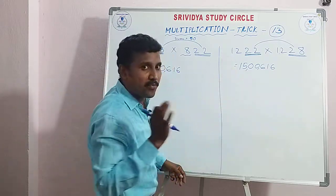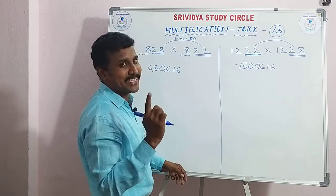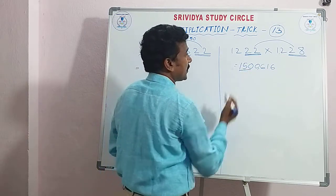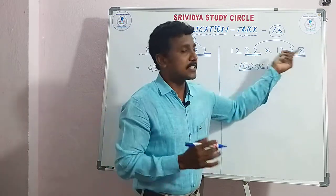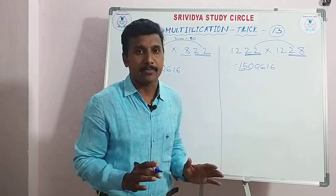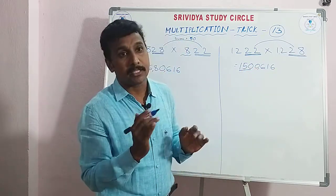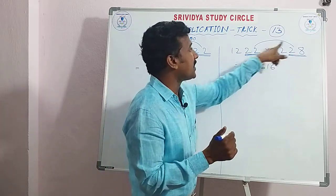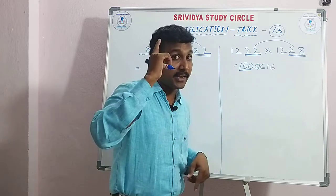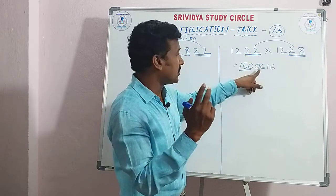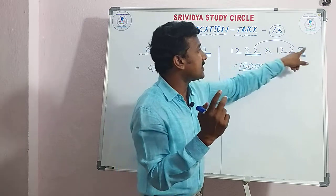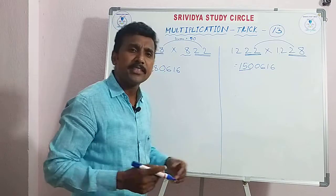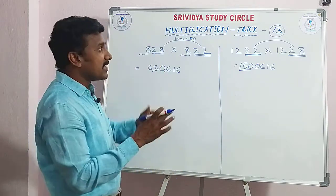For 1222 × 1228: twelve squared is 144, plus twelve divided by 2 which is 6, gives 150. Now for the last two digits: 22 and 28, two plus eight is ten — trick number one applies. Two threes are six, and two eights are sixteen. Since three digits result, put a zero. So the answer is 1,500,616.